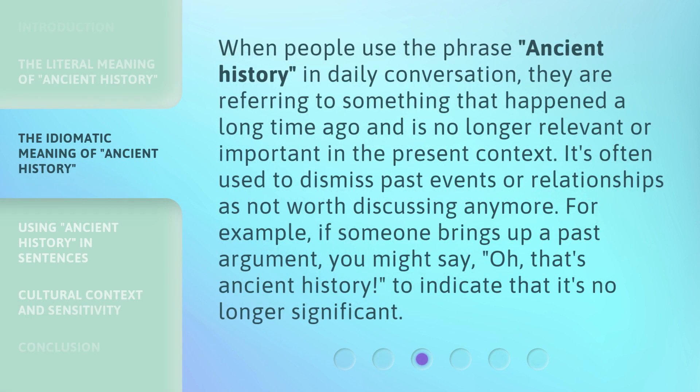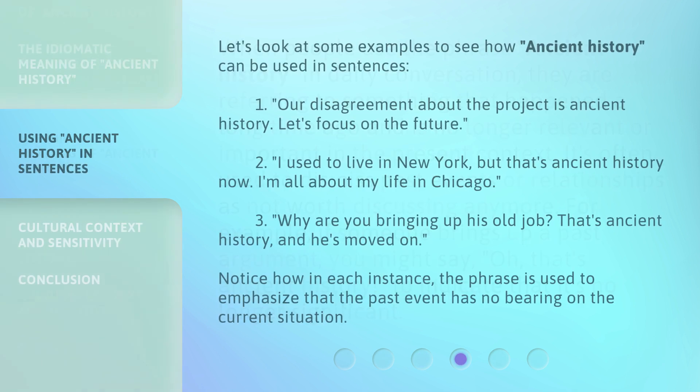When people use the phrase Ancient History in daily conversation, they are referring to something that happened a long time ago and is no longer relevant or important in the present context. It's often used to dismiss past events or relationships as not worth discussing anymore. For example, if someone brings up a past argument, you might say, 'Oh, that's Ancient History,' to indicate that it's no longer significant.